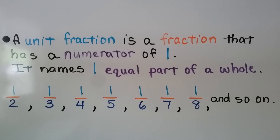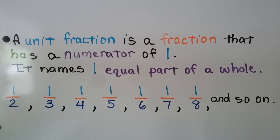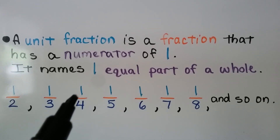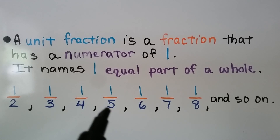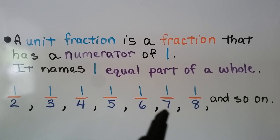A unit fraction is a fraction that has a numerator of one. Every unit fraction has a one for a numerator. It names one equal part of a whole. Here we have a half — one part out of two parts in all. One-third means one part of three parts in all. One-fourth is one part of four parts in all. One-fifth is one part of five. One-sixth, one part of six. One-seventh, one part of seven. One-eighth is one part of eight, and so on.